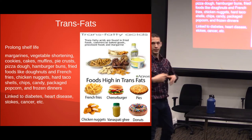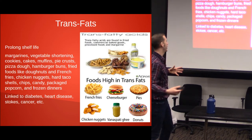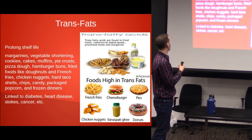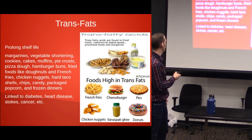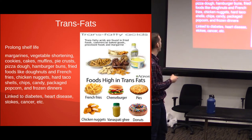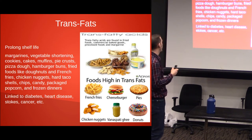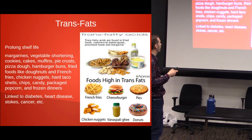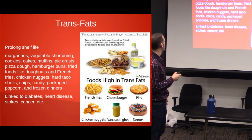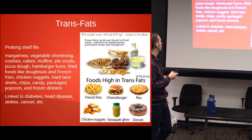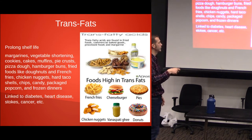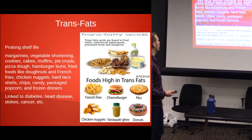Trans fats are another big problem. They're linked to diabetes, heart disease, strokes, and cancer. You find them in margarine, cookies, cakes, muffins, pie crust, pizza dough, hamburger buns, fried foods, donuts, chicken nuggets, taco shells, chips, candy, packaged popcorn, and frozen dinners. We know trans fats lead towards diabetes.